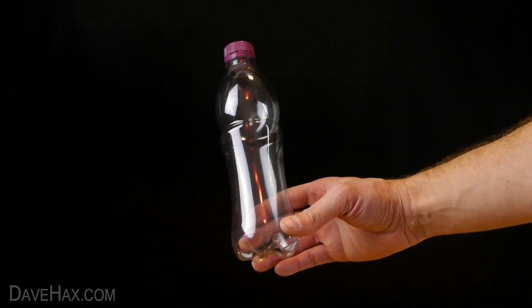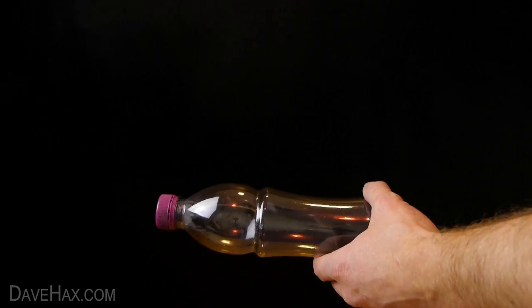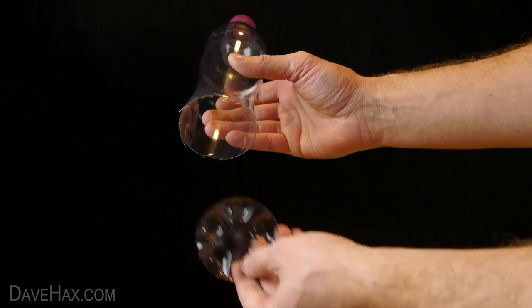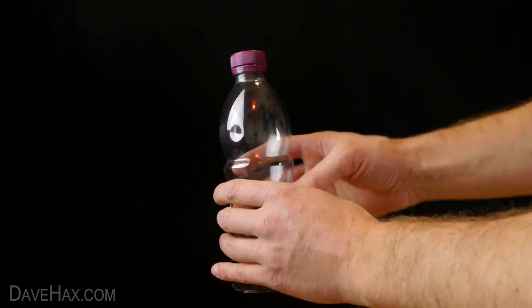Start by taking an empty plastic bottle, then using a pair of scissors carefully cut off the bottom like this and remove the lid.